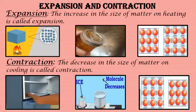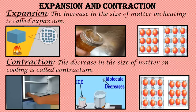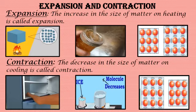Now, students, we will learn about expansion and contraction. What is expansion? When a substance is heated, the particles start vibrating rapidly and take up more space. Due to the increased movement of particles, the things expand — this is called expansion. Contraction is when a substance is cooled, the movement of particles slows down and takes up less space. This decrease in the size of matter is called contraction.